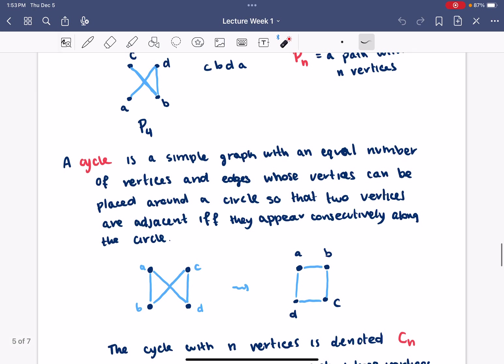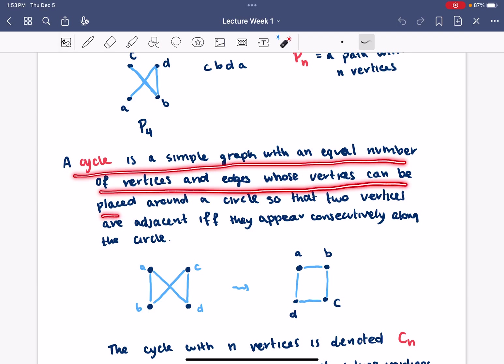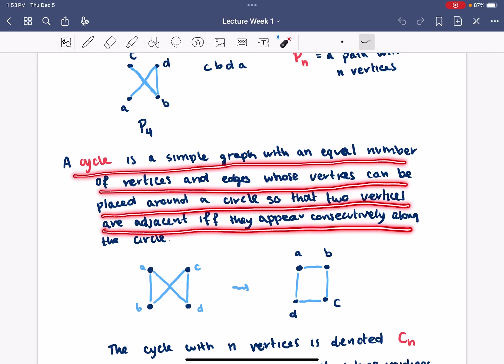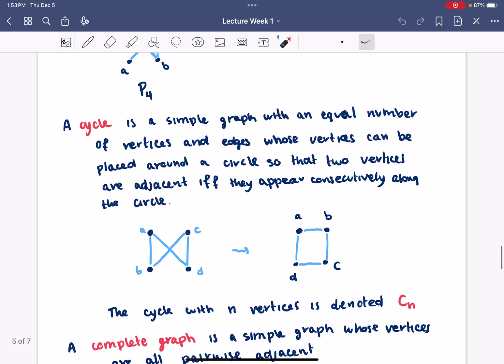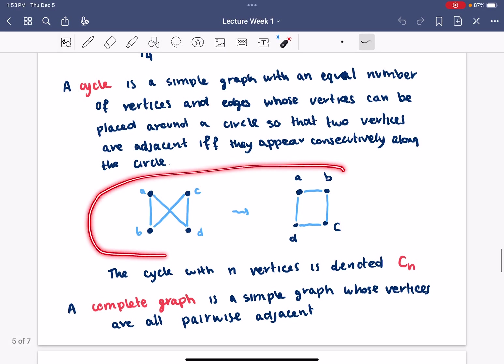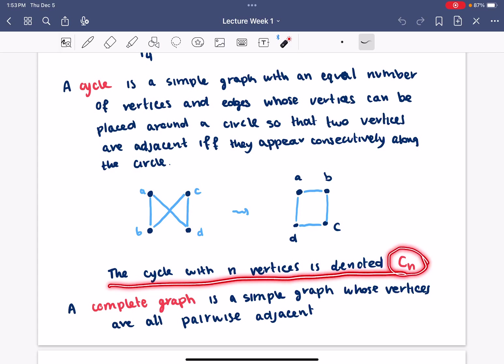A cycle is also exactly what you think it is. It's a simple graph with an equal number of vertices and edges whose vertices can be placed around a circle so that two vertices are adjacent if and only if they appear consecutively along the circle. Here's an example of that.